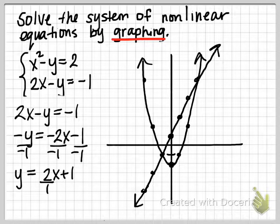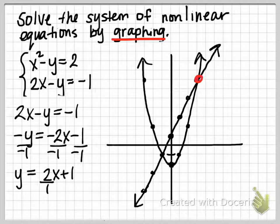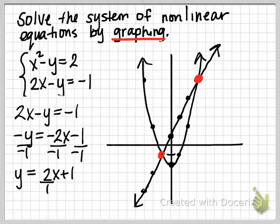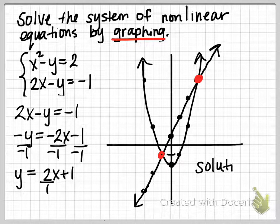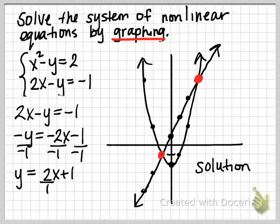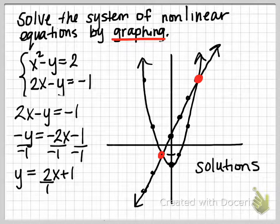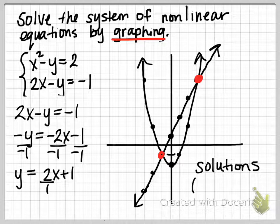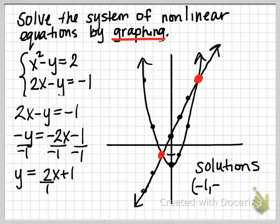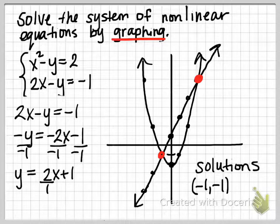And we can see our answers are going to be the intersection points, and it appears that we have 2 in this case. So your solution, in this case solutions, because there's actually 2, the solutions for this system of equations will be the coordinate negative 1, negative 1, as well as the coordinate...